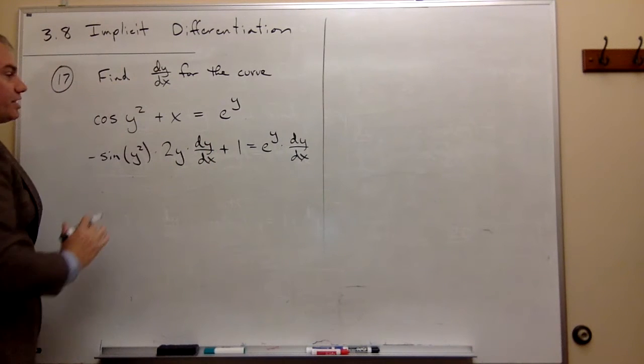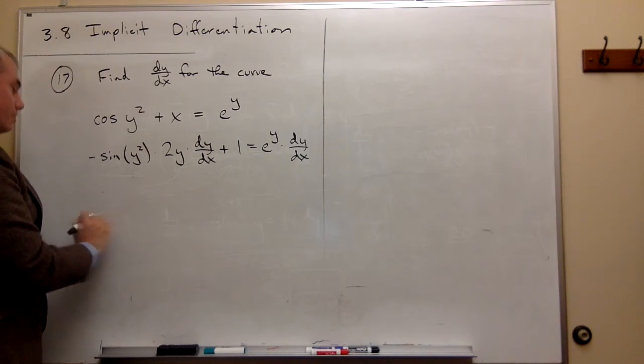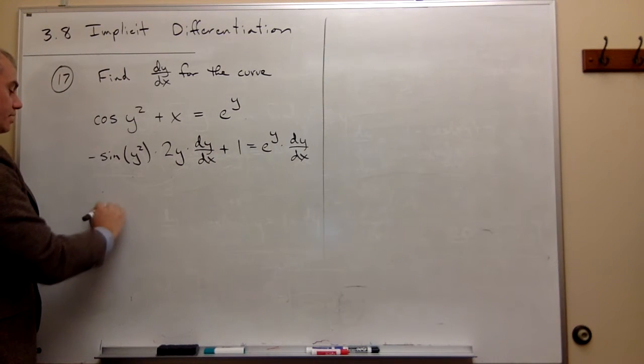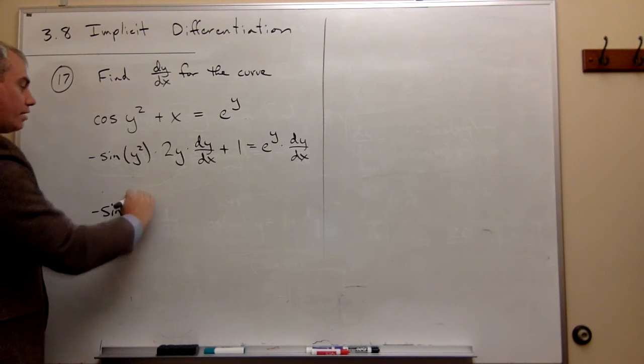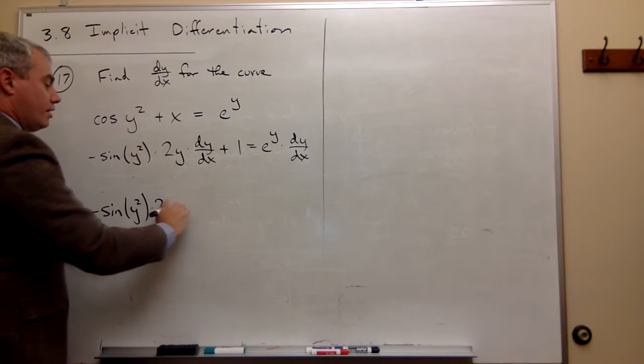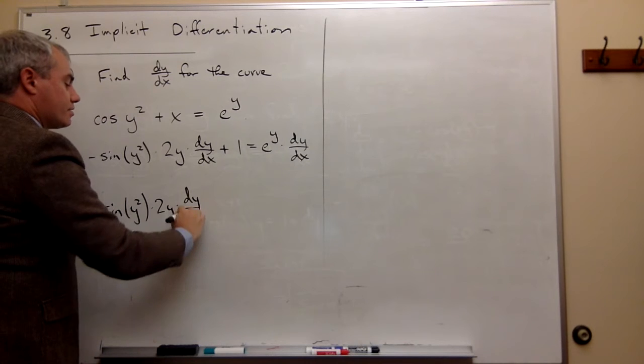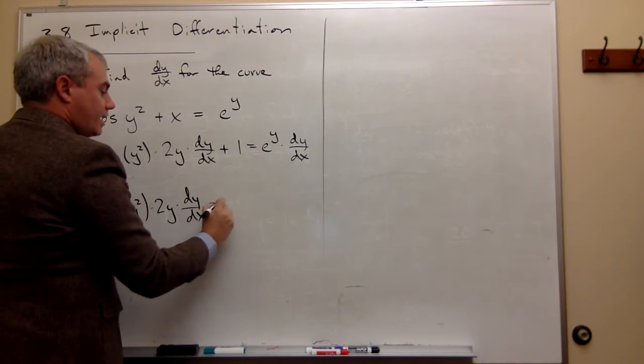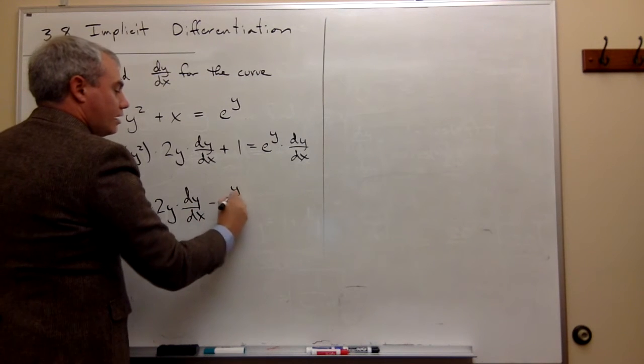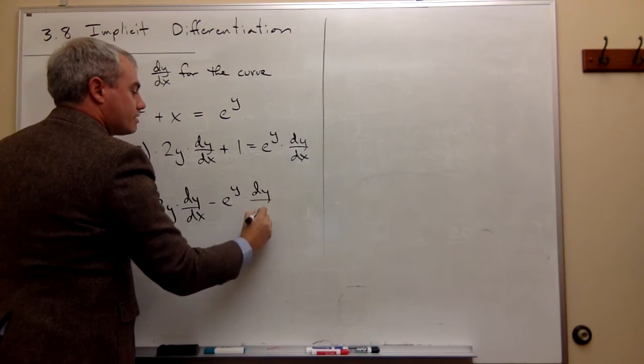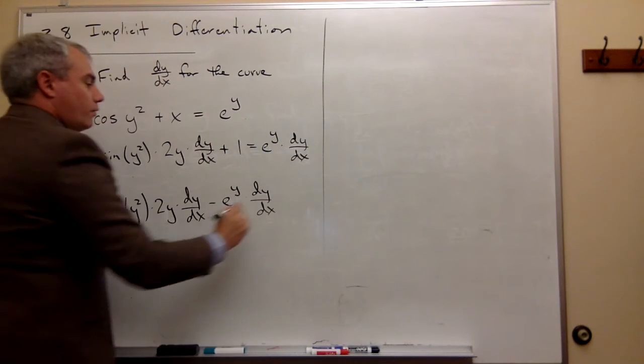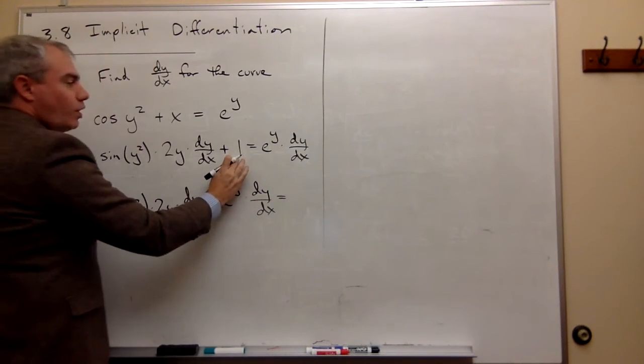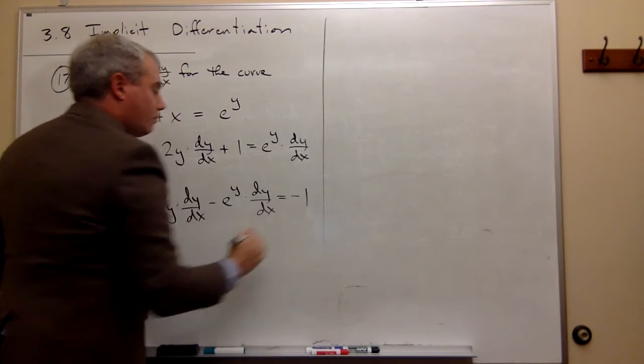I'll put all the dy/dx terms on one side of this equation. So I get -sin(y²) times 2y times dy/dx. And I also have this term, which I'll move to the other side to make it -e^y times dy/dx. When I move this one to the other side, it becomes -1.